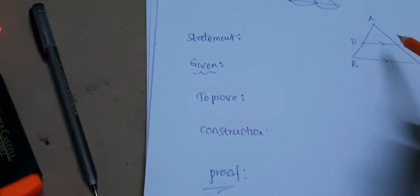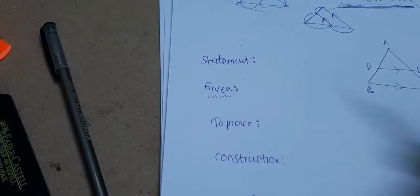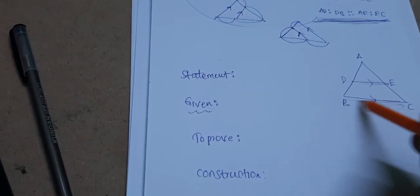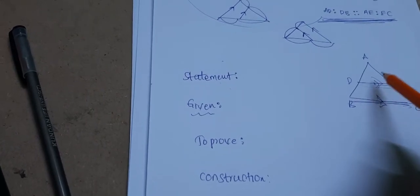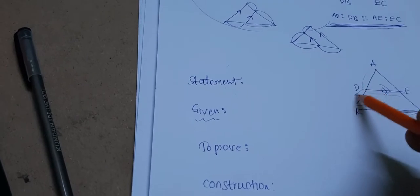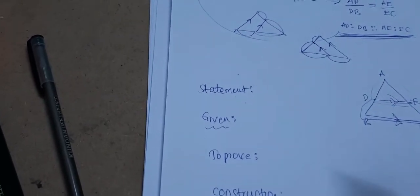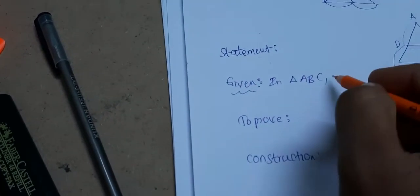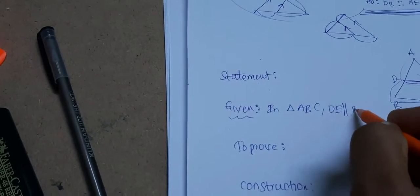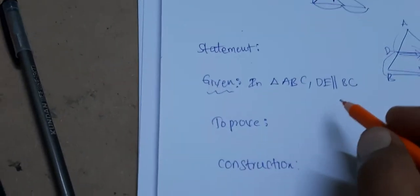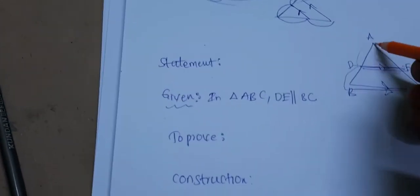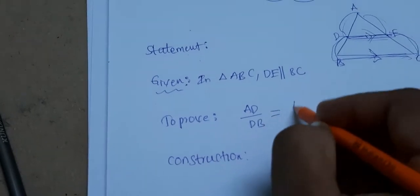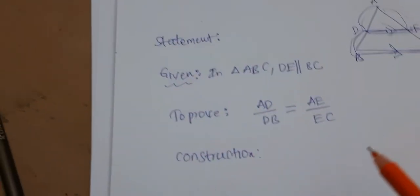The statement means whatever we derived — write it in words as sentences. In a triangle, draw a line parallel to one side; it will divide the other two sides in the same ratio. For the Given: in triangle ABC, DE is parallel to BC. To prove: AD/DB equals AE/EC.